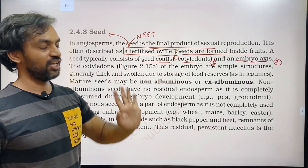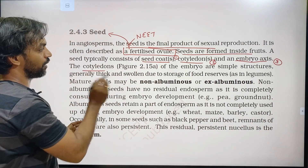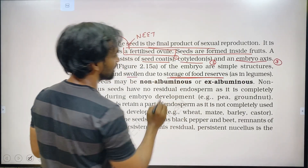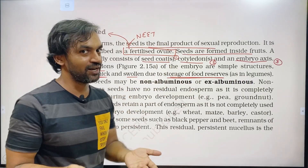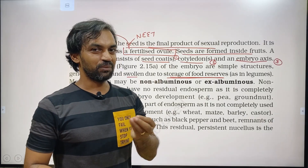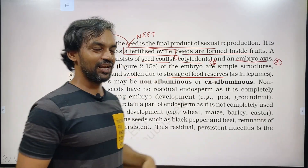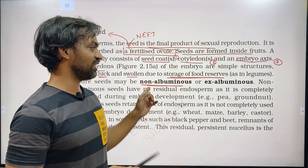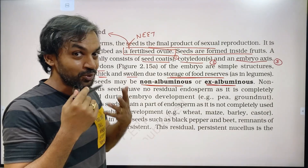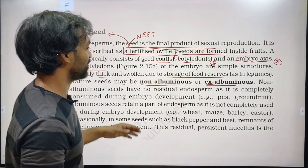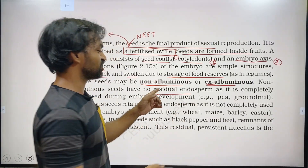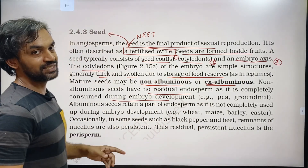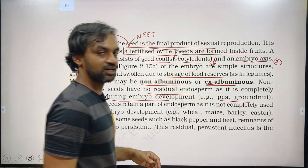The cotyledons and embryo are the main parts of the seed. The cotyledons of the embryo are generally thick and swollen due to storage of food reserves, as in legumes. Legumes are dicot plants — for example, pea. Mature seeds may be non-albuminous. Non-albuminous seeds have no residual endosperm, as it is completely consumed during embryo development. Examples of non-albuminous seeds are pea and groundnut.